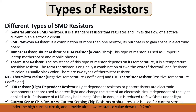The next resistor is the LDR or light dependent resistor. Photo resistors are electronic components used to detect light and change the state of an electronic circuit depending on the light applied. The resistance of an LDR may be in megaohms in the dark but is reduced to a few ohms under light. The last type is the current sense chip resistor, also called a shunt resistor, used for current sensing in high-current circuits and providing ultra-low resistance values.